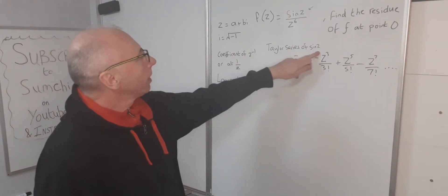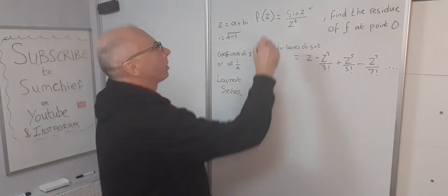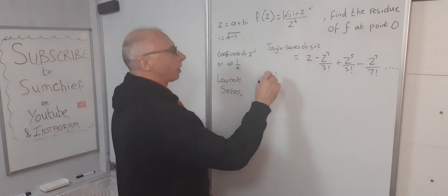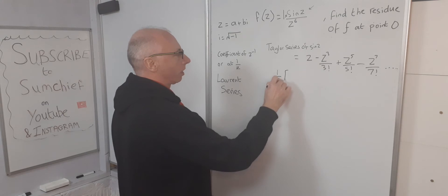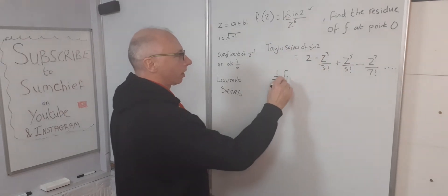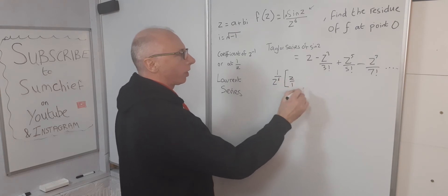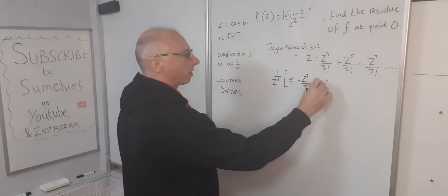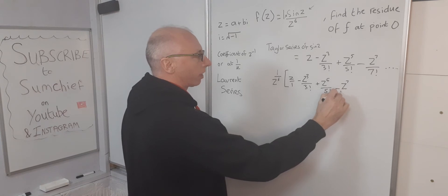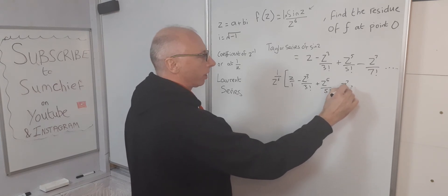We've got 1 over z to the 6, so what we do now is we just do 1 over z to the 6 times Taylor series of sine which is here. So z minus z cubed over 3 factorial plus z to the 5 over 5 factorial minus z to the 7 over 7 factorial and so on.